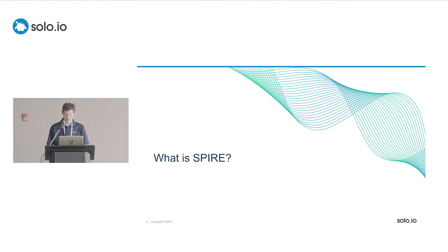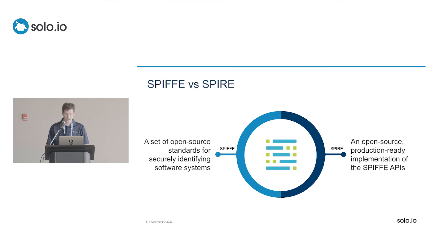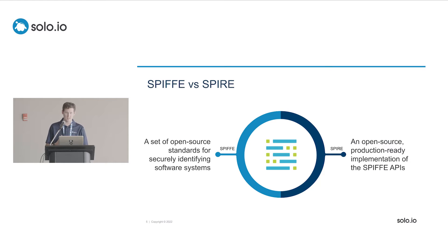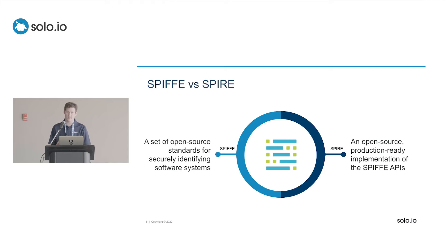What is SPIRE? The first thing you'll find when Googling is the word SPIFFE — they're pretty much intertwined. SPIFFE is the open source standard you can use for securely identifying all of your software systems, while SPIRE is a production-ready open source implementation of that standard. So SPIFFE is the framework and the standard; SPIRE is the concrete implementation.